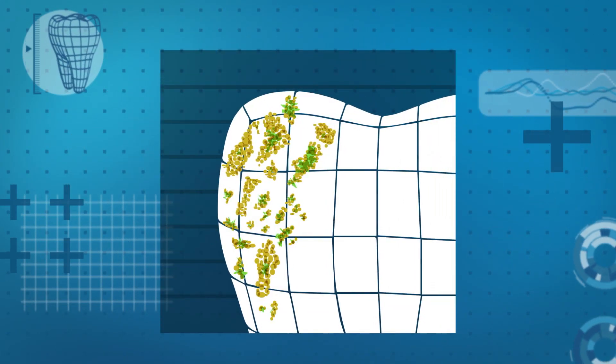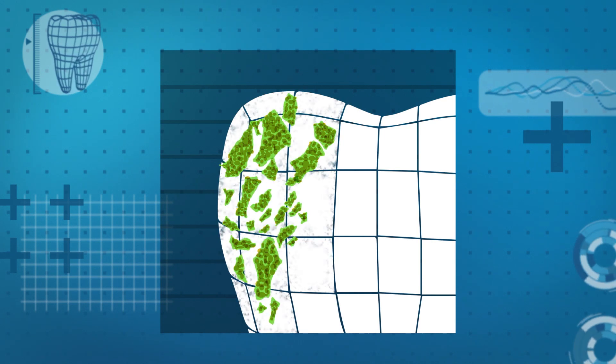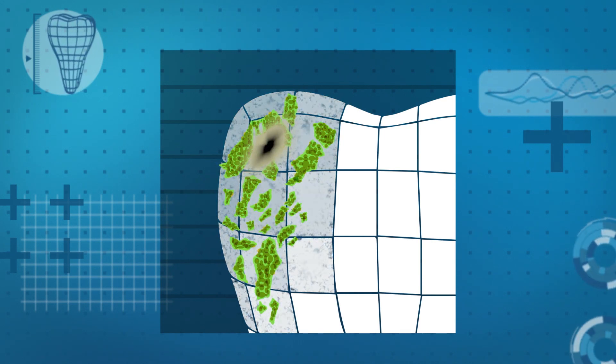The plaque bacteria creates acidic byproducts that eat away at the tooth enamel, slowly softening the tooth surface, called a cavity.